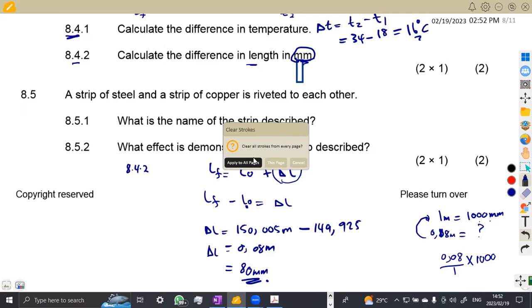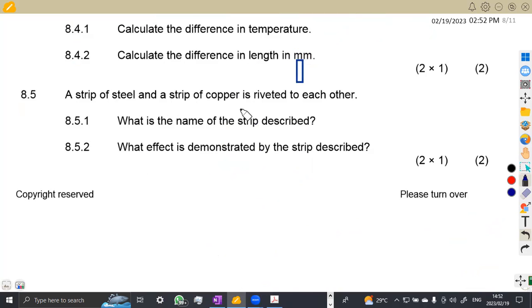On 8.5, we are now given a strip of steel and a strip of copper is riveted to each other. 8.5.1, what is the name of the strip described? A strip of steel and a strip of copper. That's a bi-metallic strip. 8.5.2, what effect is demonstrated by this strip described? It is used in the difference in linear expansion of different materials. So the effect is difference in linear expansion of different materials.